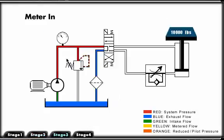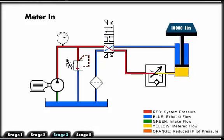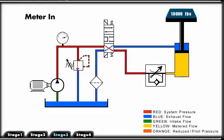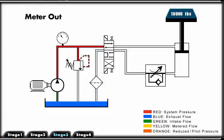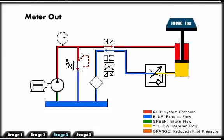Although meter in is usually the best placement for controlling a constant speed because it also dampens flow and pressure transients, it may be required in some applications to meter out. To meter out, we simply change the direction that the flow is allowed to pass through the reverse check. This will cause the fluid to be metered as it leaves the actuator, which is opposite of meter in.